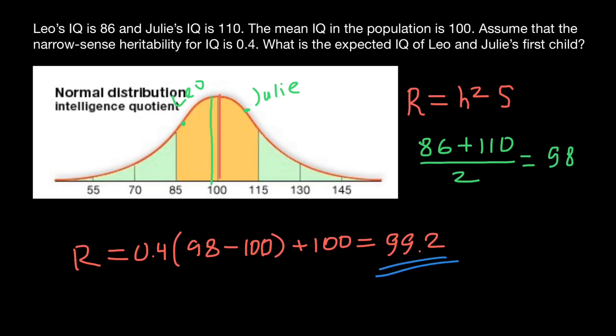And this is going to be our answer. This is the predicted IQ of the child, of Leo and Julie's first child. But underline first child, because actually this is a fictional problem and this doesn't work like this.